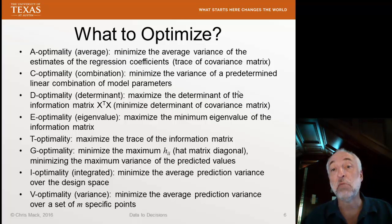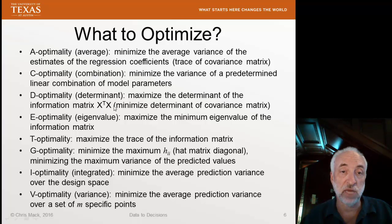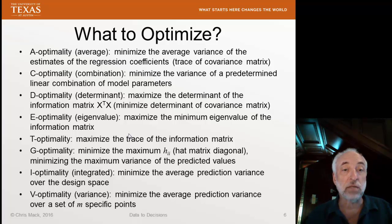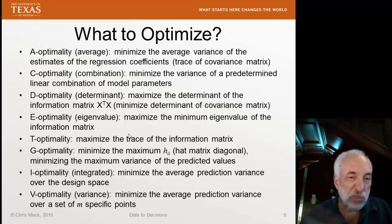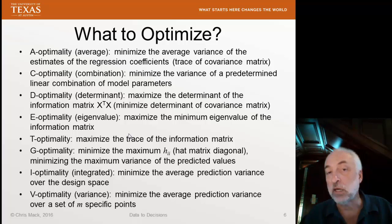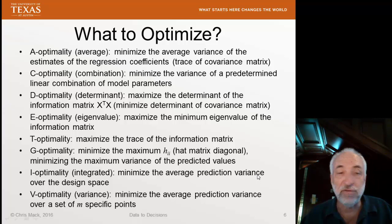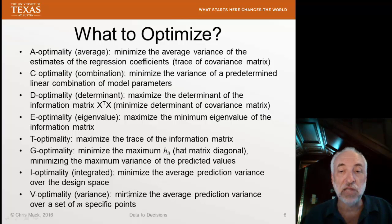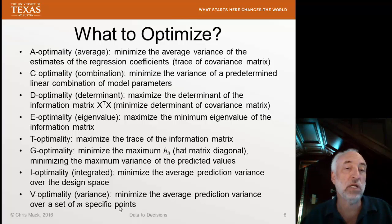E-optimality means maximizing the minimum eigenvalue of the information matrix, which is X-transpose times X — the design matrix. We saw before that a range of eigenvalues is a consequence of multicollinearity. So this is essentially optimizing the spread of the data to minimize multicollinearity, which might be one of our goals in the experimental design. I-optimality is minimizing the average prediction variance over the design space — that is, over the range of X predictive variables used in the regression. V-optimality is minimizing the average predictive variance over set points specified ahead of time. All of these things will lead to different optimal designs, so you have to be very careful how you pick what it is you want to optimize.